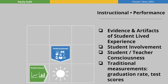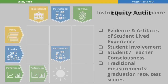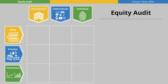And finally, the instructional performance. What are the evidence and artifacts of the student's lived experience in the work they produce? How do we measure student involvement? How about student and teacher consciousness? Traditional measures will also be used. The goal of this equity audit is to be a usable tool for school leaders and practitioners to examine policies, practice, and performance in the institutional, instructional, and individual dimensions.